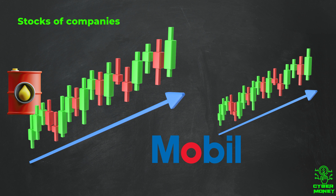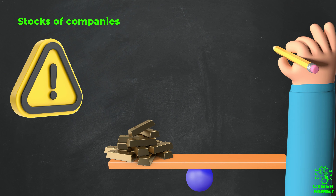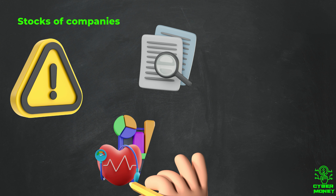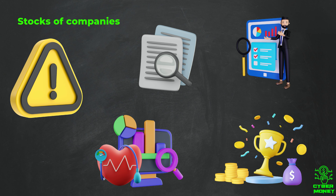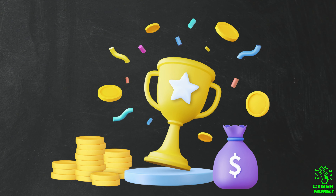If the price of the commodity they produce goes up, the stock price of the company will also likely go up, and vice versa. However, investing in a single company's stock carries more risk than investing in a commodity index, because the performance of a company depends not only on the price of the commodity it deals with, but also on the company's specific operations and management.